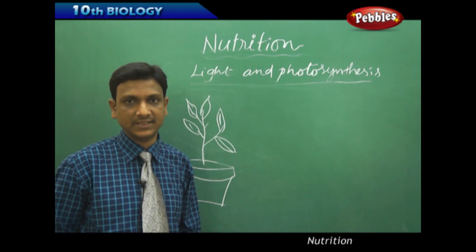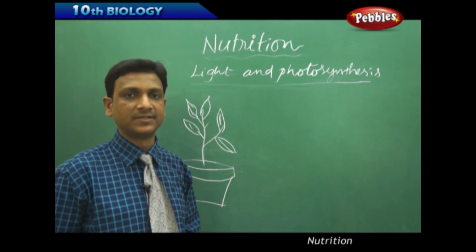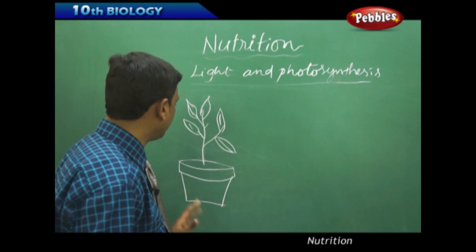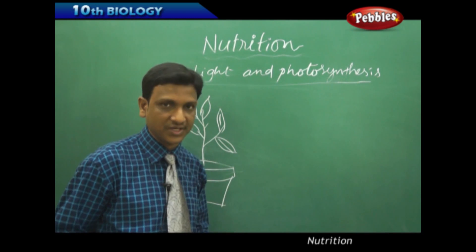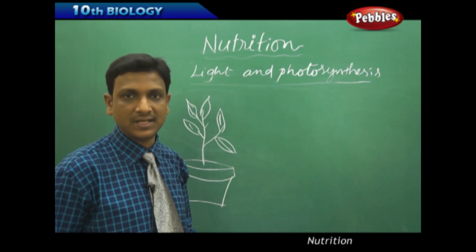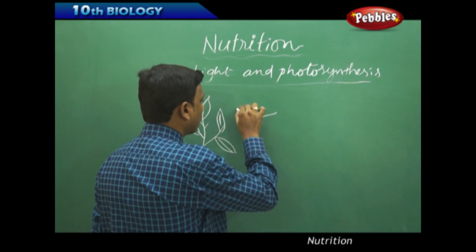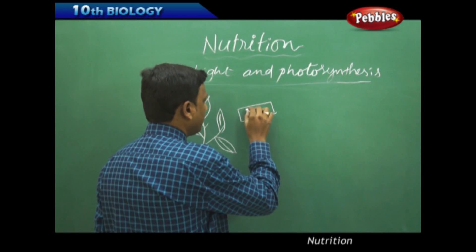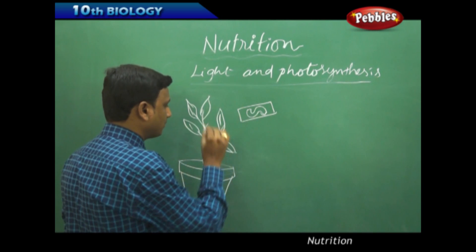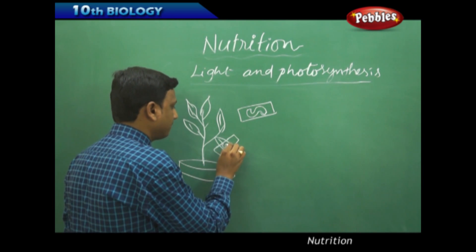Now let us look at one more activity which helps us prove that light is necessary for photosynthesis. We need a potted plant whose leaves have been destarched by keeping it in the dark for some days. Now take a cardboard and make a cut design on it — some S-shape or some kind of shape. Take this cardboard and place it on one of the healthy leaves, with the shape aligned over the leaf.